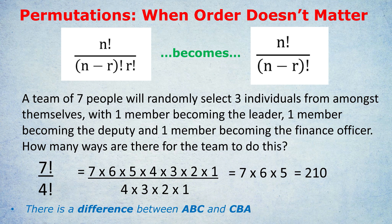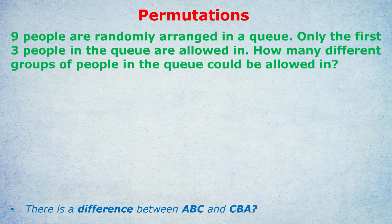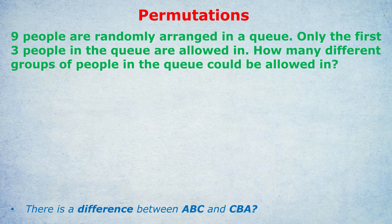What about another question? To really bed this in. Nine people are randomly arranged in the queue. Only the first three people in the queue are allowed in. How many different groups of people in the queue could be allowed in? I was testing you. I was testing you. This is a combinations question. There is no difference between ABC and CBA. Did you notice I put a question mark at the end, at the bottom?